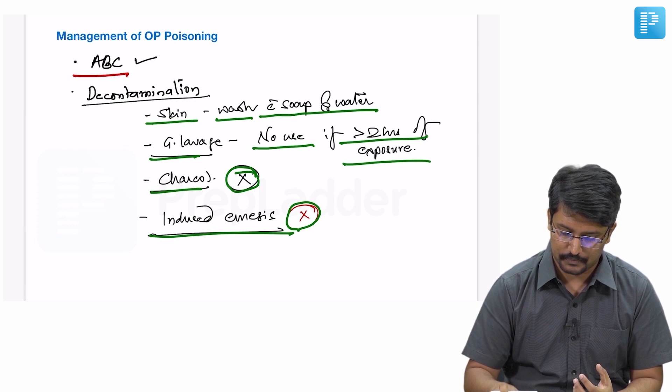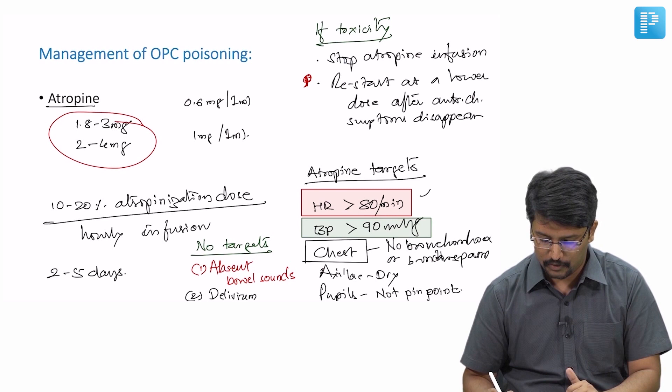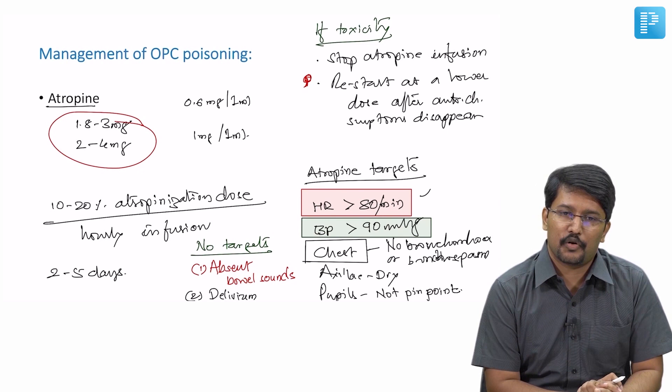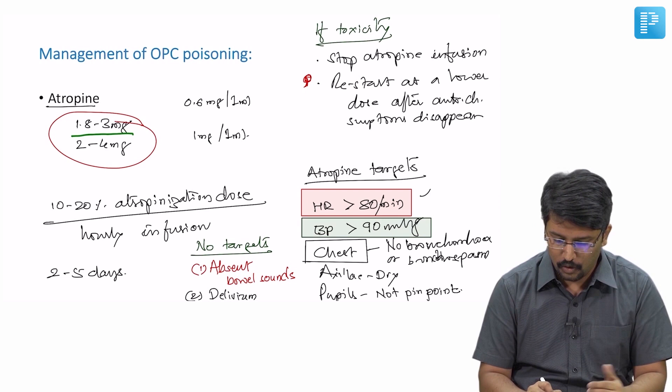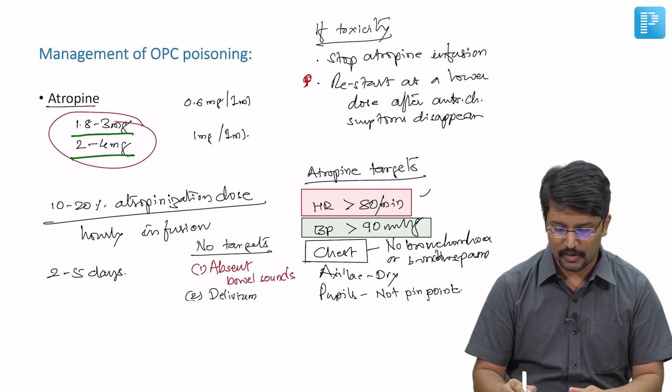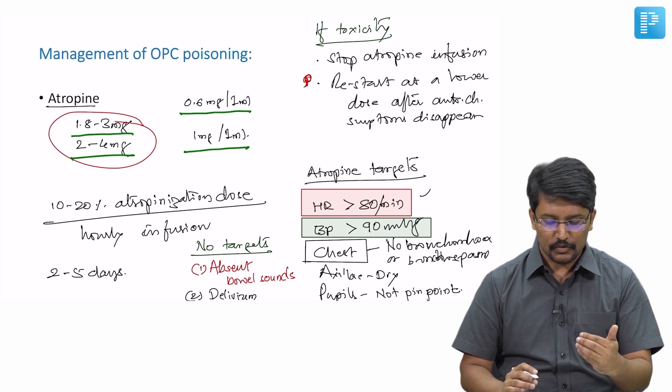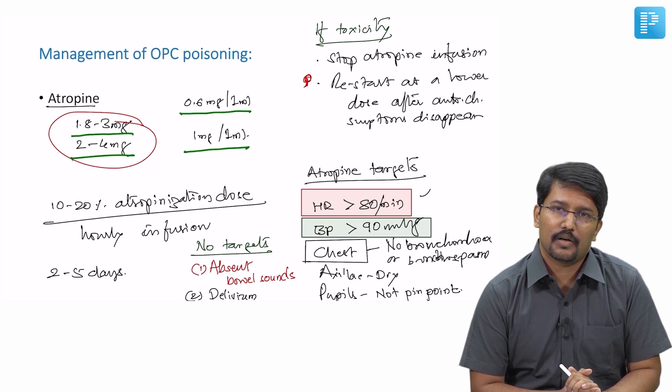Then comes the question of use of antidotes. You are all aware, atropine is the antidote of choice for management of organophosphate compound poisoning. The question here is the dose that we need for achieving atropinization. So we start with a dose of around 1.8 to 3 milligrams or 2 to 4 milligrams depending on whether you are drawing the atropine from a vial or ampule. In an ampule, it is usually 0.6 milligram per ml and in a vial it is 1 milligram per ml. We should give this dose and keep repeating the dose till we achieve the atropine targets.